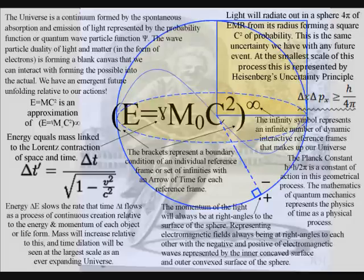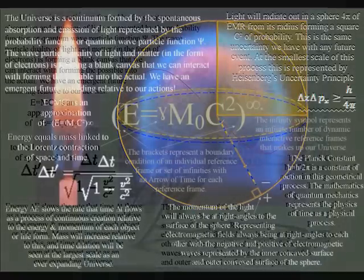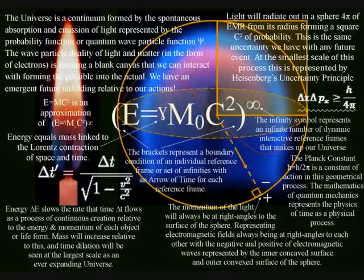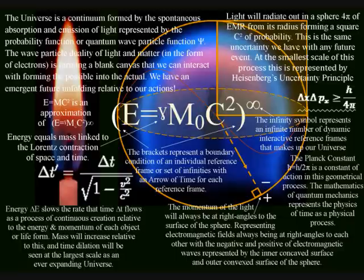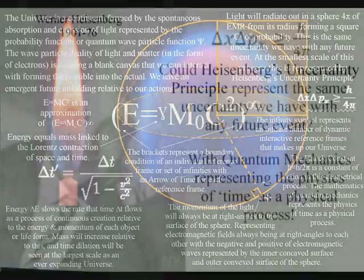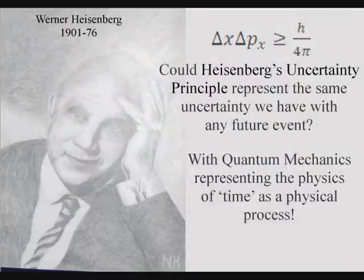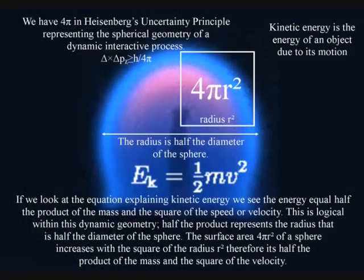Light will radiate out in a sphere of electromagnetic radiation from its radius forming a square of probability. From within the reference frame of the candle flame this represents an uncertain future unfolding. At the smallest scale of this process this uncertainty is represented mathematically by Heisenberg's uncertainty principle. If we look at the equation explaining kinetic energy we see the energy equal half the product of the mass and the square of the speed or velocity.